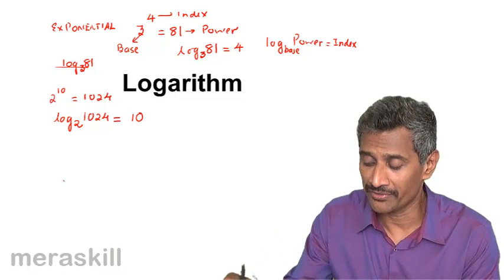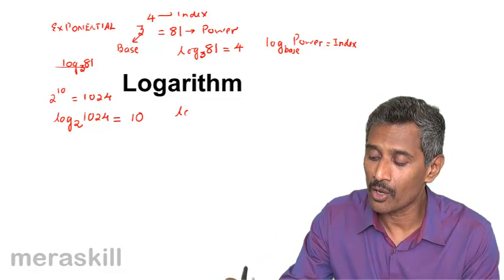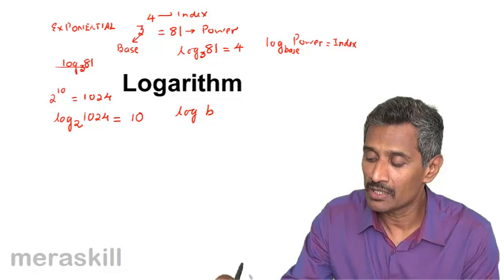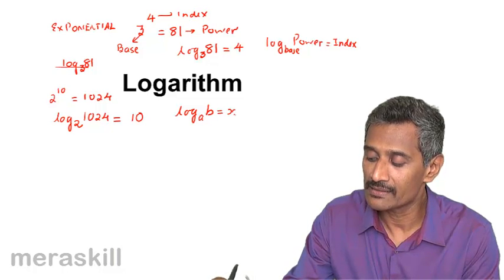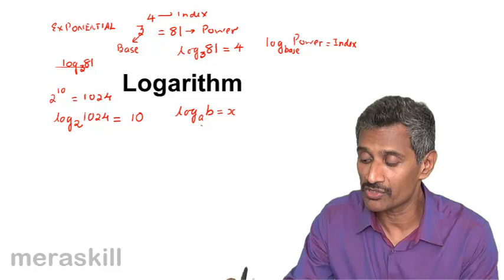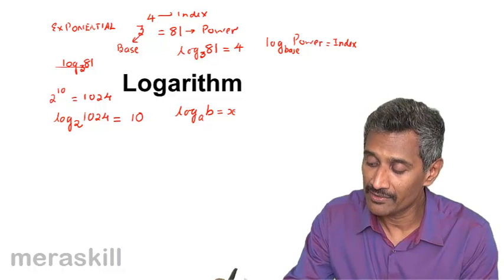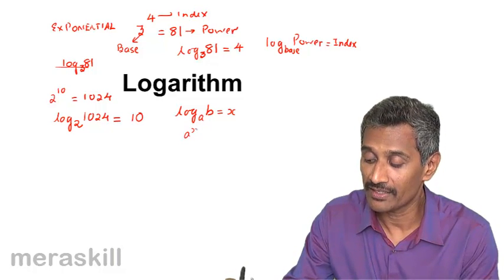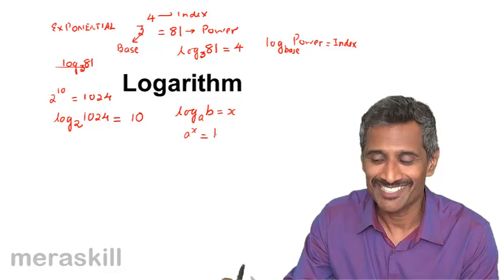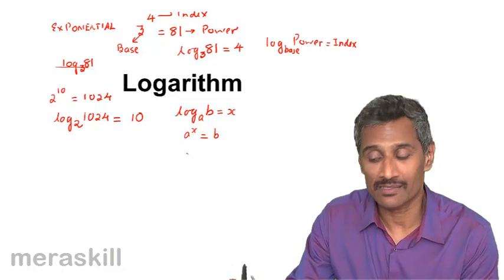In general, suppose log_a(b) = x. The same thing in exponential form means a raised to x is b. So a^x = b.